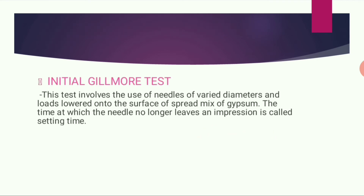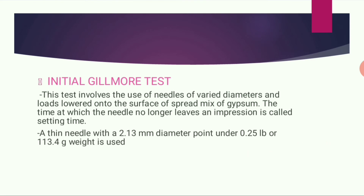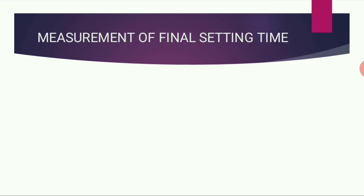The second method is the initial Gilmore test. This test involves the use of needles of varied diameters and loads placed onto the surface of a spread mix of gypsum. The time at which the needle no longer leaves an impression is called the setting time. A thin needle with a 2.13 mm diameter point under 0.25 pound (113.4 grams) weight is used. The initial Gilmore setting time is approximately 13 minutes.